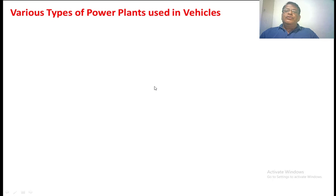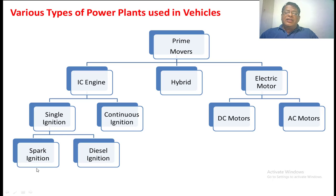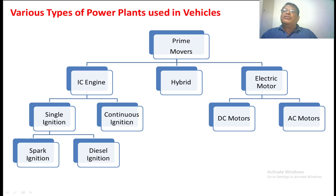Now we are going to see the various types of power plants used in a vehicle. There are different types: one is the IC engine, second is hybrid, and third is the electric motor. When it comes to the IC engine, there are two categories: one is single ignition and second is continuous ignition. Under single ignition, there are two types — spark ignition, used for petrol vehicles, and diesel ignition, used for diesel-driven vehicles. Continuous ignition means that when fuel is burning, ignition is continuously supplied; this is used in aeroplanes. Electric motors are broadly classified into two types: DC motor and AC motor, each with further sub-classifications. Hybrid vehicles are a combination of both electric motor and IC engine.